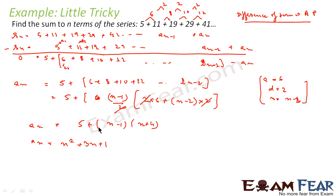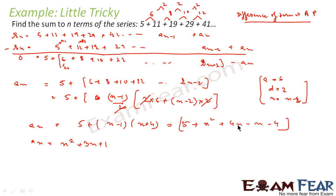Expanding: an = 5 + n² + 4n − n − 4 = 5 + n² + 3n − 4. So an = n² + 3n + 1. That is the answer for the nth term. The nth term of this series is n² + 3n + 1.